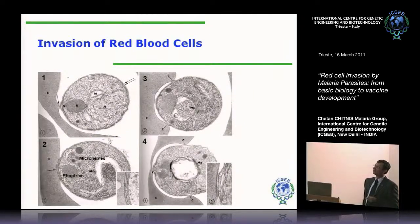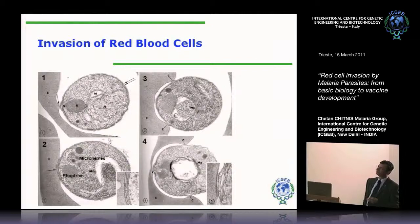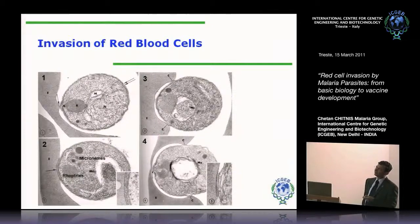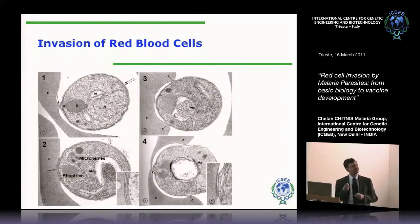Invasion has been studied both by video microscopy and electron microscopy. Malaria parasites belong to the apicomplexan group, which means these are parasites which have membrane-bound organelles at the apical end, referred to as rhoptries — these large organelles — and smaller organelles called micronemes. These membrane-bound organelles contain proteins that play a critical role in invasion, as I will show you.